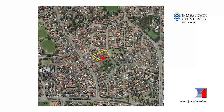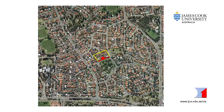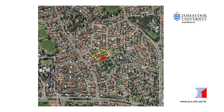Step 4 is determining the shielding for the site. This house has two rows of houses on three sides but a park across the road. Therefore the house is considered to have no shielding.